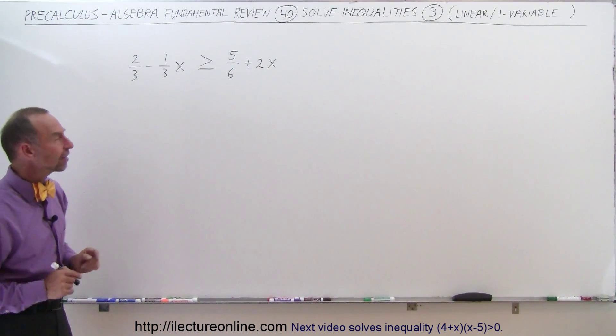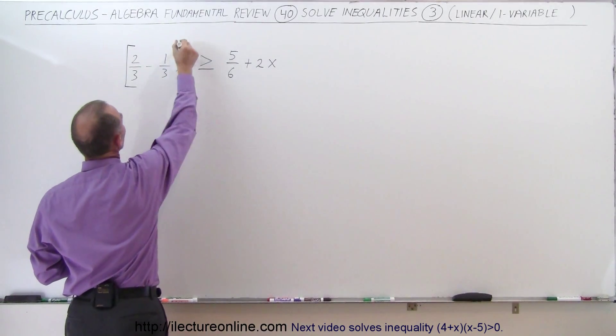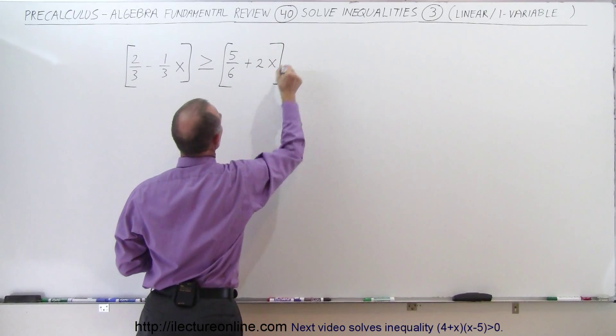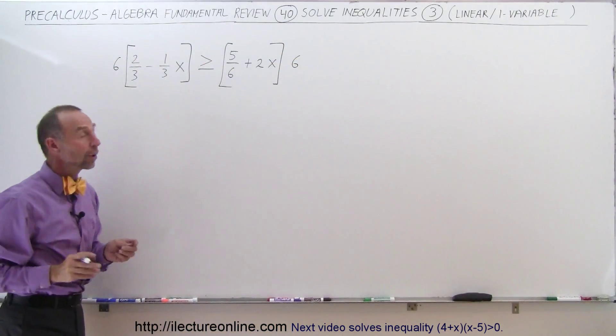Which means we're going to multiply both sides of the inequality by the number 6. So when we multiply the left side by 6, multiply the right side by 6, we do not change the inequality. Now let's go ahead and do that.